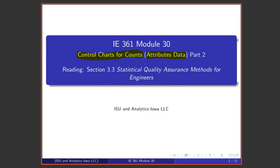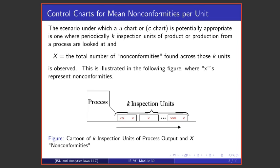In the previous module we discussed p-charts and np-charts. In this module we're going to talk about control charts for mean nonconformities per unit, which are called u-charts or c-charts.